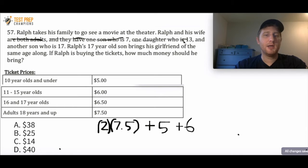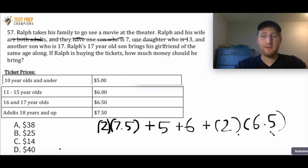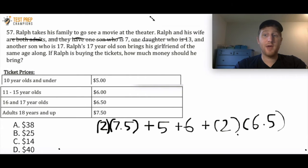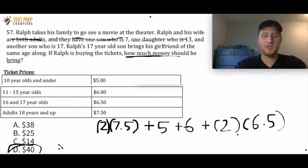There's another son who is 17, but then the son is going to bring his girlfriend of the same age along. So we've got two 17-year-olds. I'm going to do 2 times 6.5, because the cost for 16 and 17-year-olds is $6.50. If you add all these up, you should get 39. The catch is that it's asking how much money he should bring, so A is not enough. D is a dollar more than what he needs, but it's better to have more money. So D is the correct answer.